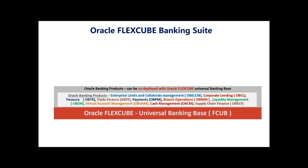The previous Teller module has been replaced with OVBRN, Oracle Banking Branch, which takes care of all branch operations of the bank. Then, to enable corporate customers for their liquidity management functions, to operate in virtual accounts, to offer cash management services for corporates, or supply chain financing for corporate clients — that is OBSCF.